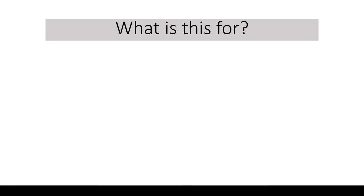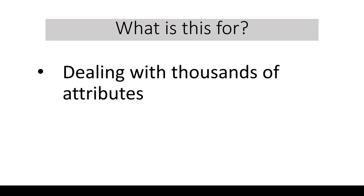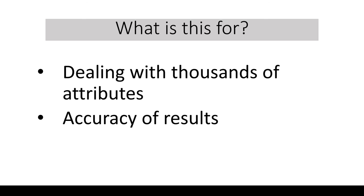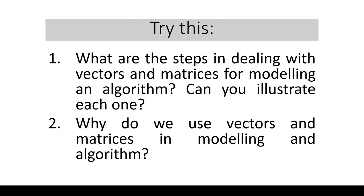Why do we have to study this? In many machine learning applications, we do not consider a few variables only. Instead, we have to deal with thousands of attributes, if not just 100. These can be dealt with using matrices and vectors, and with this, the results would be more accurate. So, what are the steps in dealing with vectors and matrices for modeling an algorithm? Can you illustrate each one? Why do we use vectors and matrices in modeling an algorithm? Leave your answers in the comments below so that we can have rich interactions and an exchange of ideas.